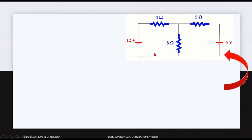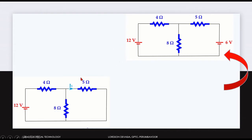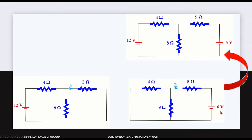As per the Superposition Theorem, we consider the sources individually. First, considering the first source, 12 volt, then considering the second source, 6 volt. By considering the first source, the current is I1. For the second source, the current is I2. Then when the circuit is combined with both sources — 12 volt and 6 volt — we get the complete circuit.